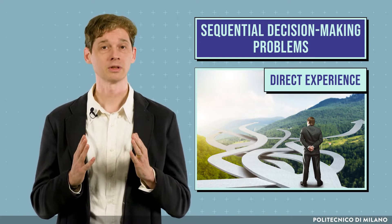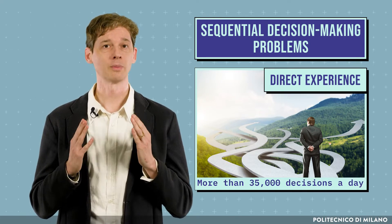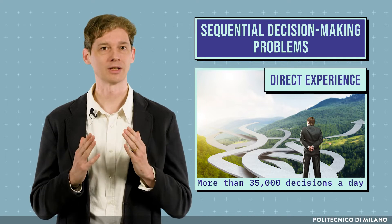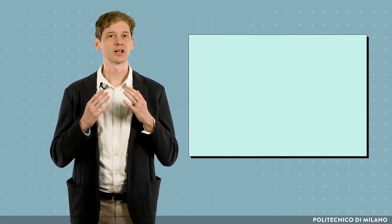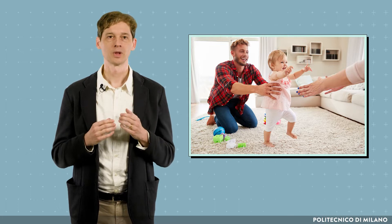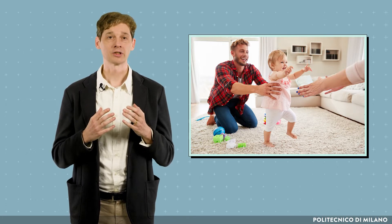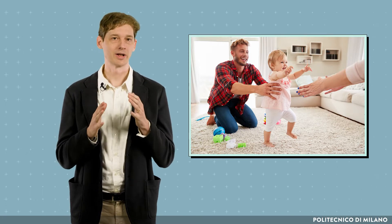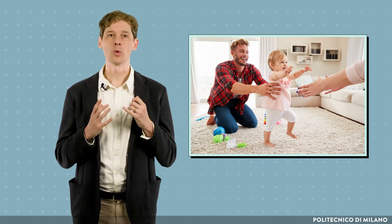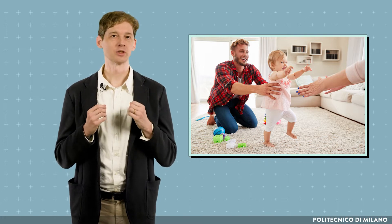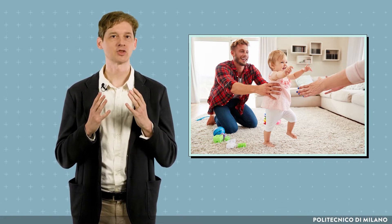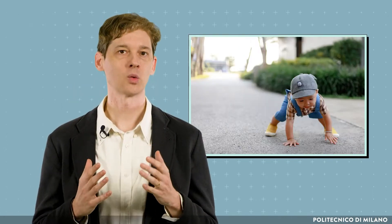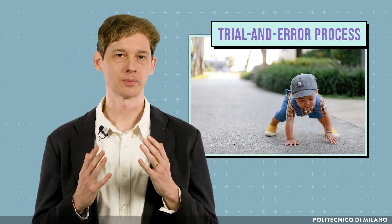An average adult is estimated to make more than 35,000 decisions a day. Let's consider a child who learns to walk. Most of us learned to walk when we were about one year old. At that age, no one has explicit knowledge of physics, and the ability to understand parental suggestion is limited. We learn to walk primarily through a trial and error process.